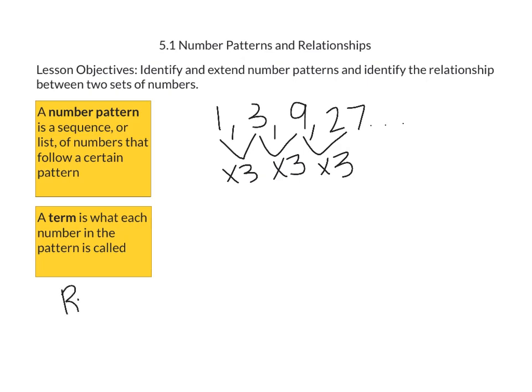So our rule is multiply by 3. We are going to use that rule to help us figure out what the next three terms in this pattern are. Since we are multiplying by 3, we are going to take our fourth term, 27, and multiply 27 times 3. 3 times 7 is 21, 3 times 2 is 6, plus 2 is 8. So 81 would be the fifth term in the sequence.